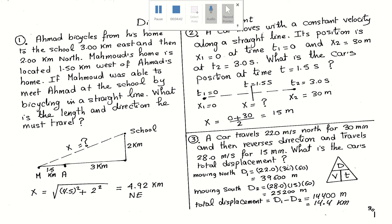Very straightforward, very easy. Now let's move on to problem number 3. A car travels 22.0 meters per second north for 30 minutes, then reverses direction and travels 28.0 meters per second for 15 minutes. What is the car's total displacement? This is very similar to problems 1 and 2 — we need to calculate how much distance the car covered in each interval.